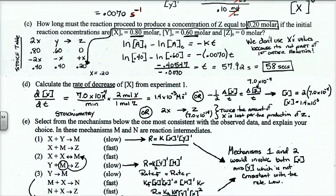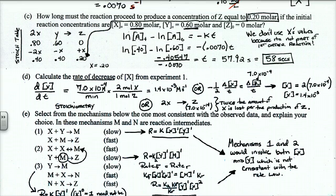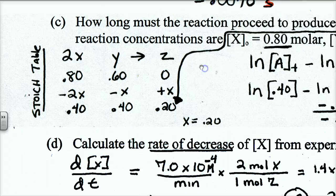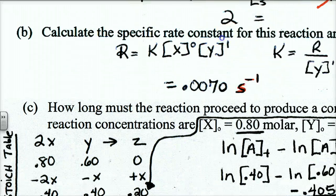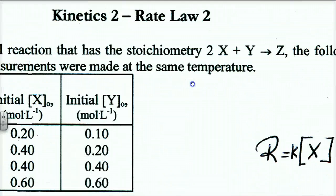Number c is where we start using integrated equations for the first time. This is a very typical question and one of the hardest you can see — but it's very doable. How long must a reaction proceed? How much time does it take for the product to equal a certain value? That's an integrated formula question. We're not talking about initial concentration; we want z to get to 0.2 molar, with initial concentrations of x at 0.8 molar and y at 0.6 molar.